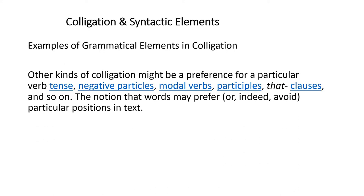There are other kinds of grammatical elements in colligation. These include preferences for a particular verb tense — past, present, or future. Also negative particles — words that indicate negativity, such as 'not,' 'cannot,' 'did not,' 'do not,' 'have not,' 'will not,' 'nothing,' and 'nobody.' These are called negative particles.